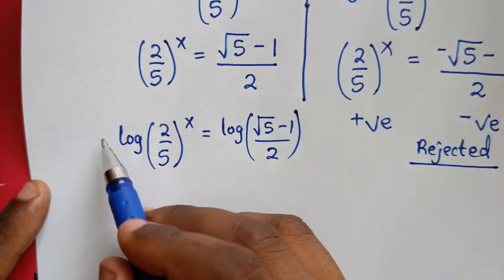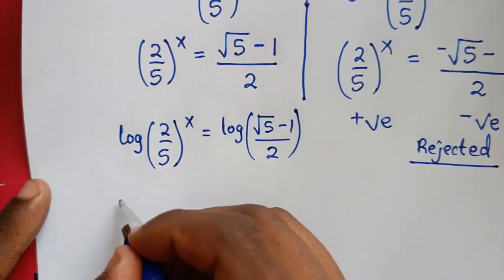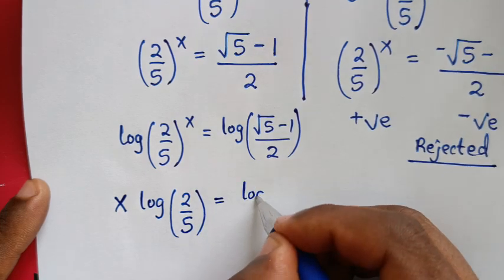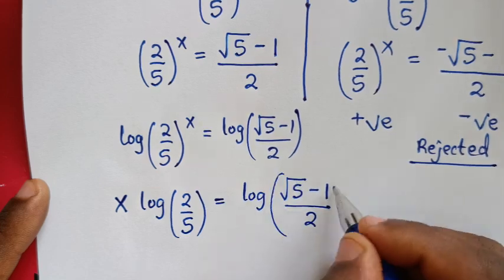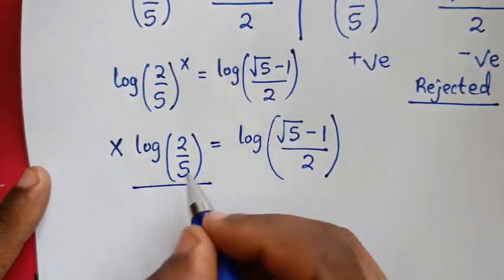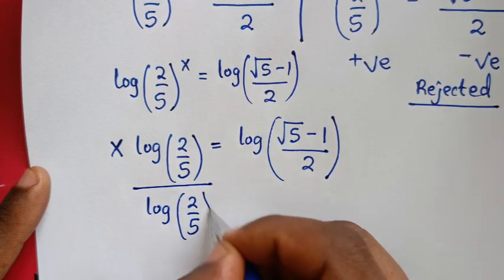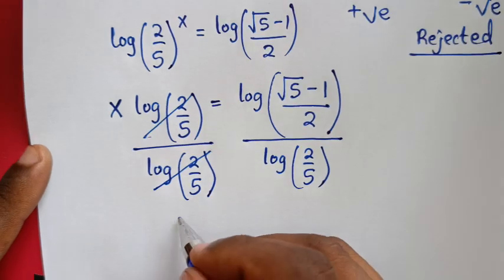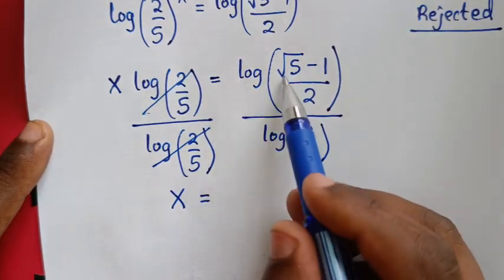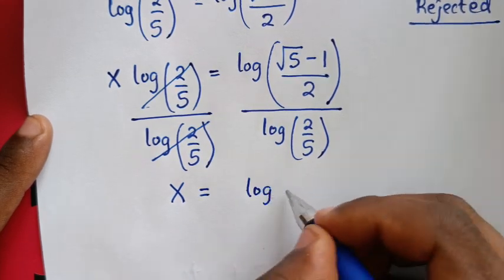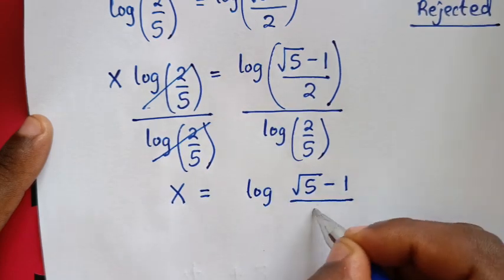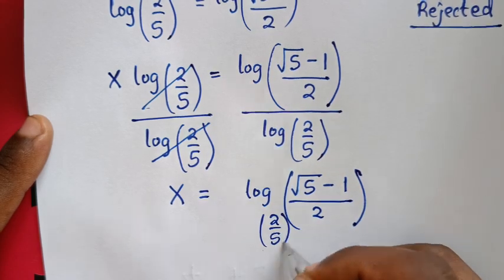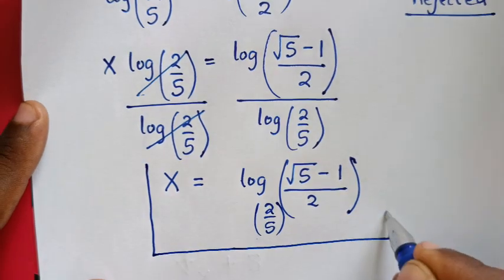We bring the power of x out in front: x × log(2/5) = log((√5 − 1)/2). Dividing both sides by log(2/5), we get x = log((√5 − 1)/2) / log(2/5), which can be written as x = log base (2/5) of ((√5 − 1)/2). This is the final answer.